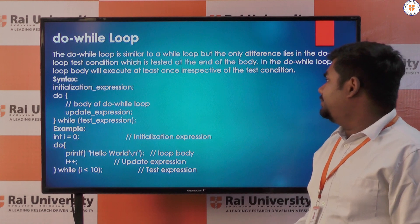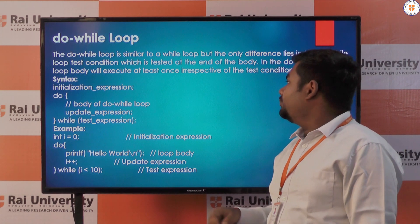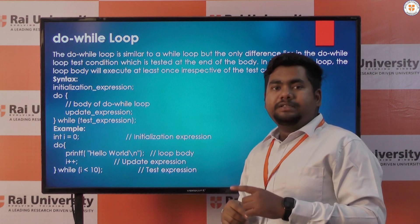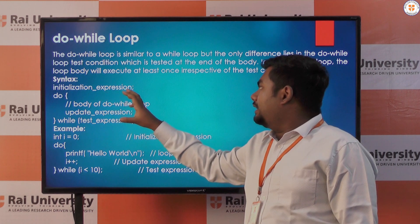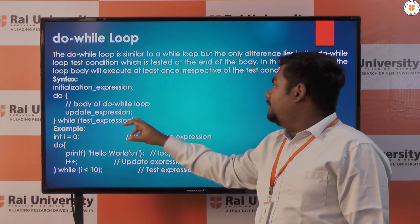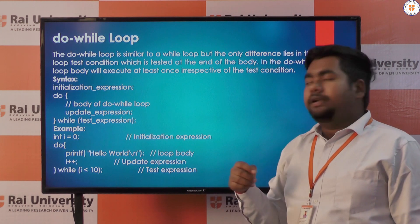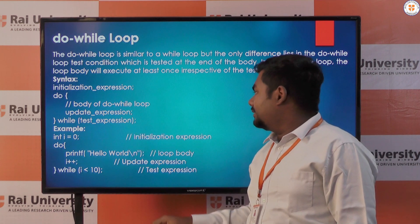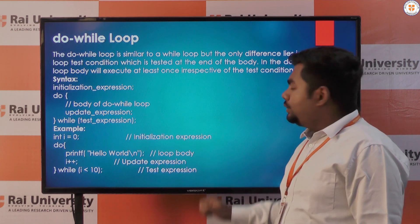Then do-while loop. Do-while is an exit control loop. In do-while loop we initialize the expression before the starting of the loop. Then during the loop we update our expression, and at the exit time we test the expression. Here you can see the example of do-while loop.